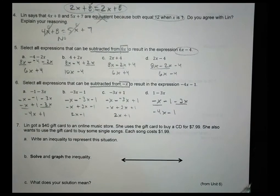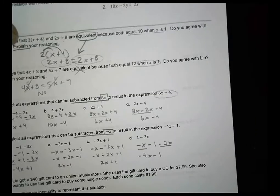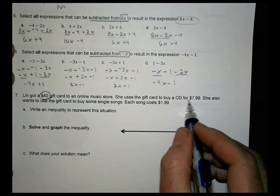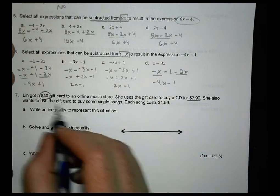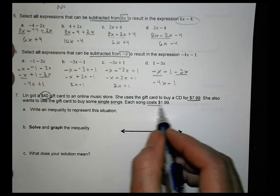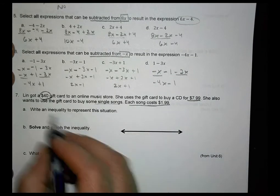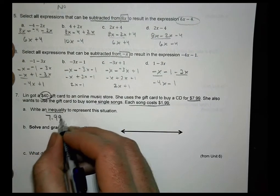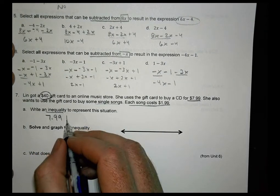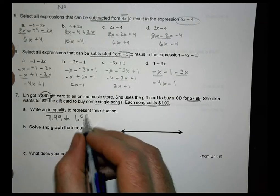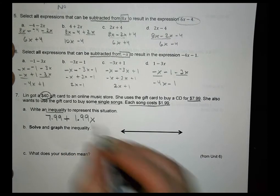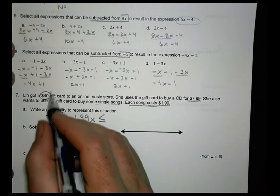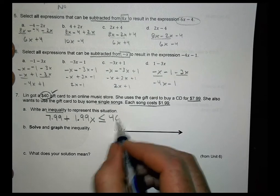All right, number 7. All right. Yeah, can't argue with free help, right? Hey, what can I say? Lynn got a $40 gift card. Yay. She used it to buy $7.99 CD. And she wants to buy some single songs, which costs $1.99 each. So write an inequality for the situation. Well, she's going to spend $7.99 for a CD. She's going to add to that the cost of a single, which is $1.99 for every song. And the combination of all that needs to be less than or equal to the amount on the gift card, which is $40.